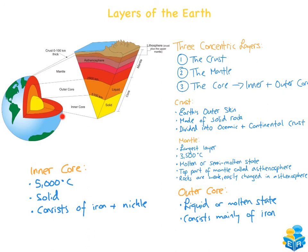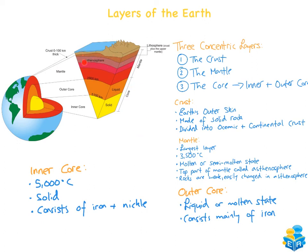To summarise: the inner core reaches up to 5,000 degrees Celsius, is solid due to pressure, and consists mainly of iron and nickel. The outer core is liquid or semi-molten due to less pressure and consists mainly of iron. The mantle is the largest layer, making up about 80% of the earth's volume, with temperatures up to 3,500 degrees Celsius. The top part of the mantle — the asthenosphere — is a very weak zone where rocks can almost flow, driven by convection currents that explain why plates move.